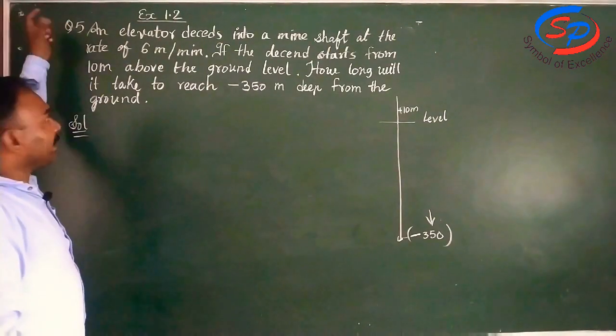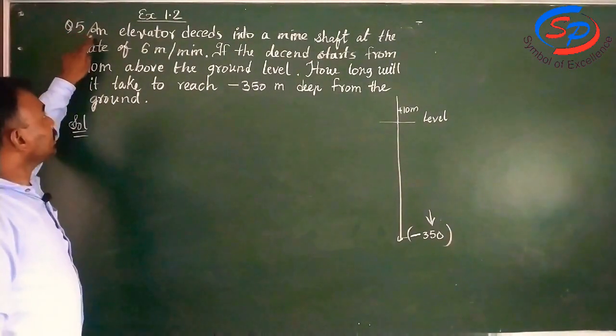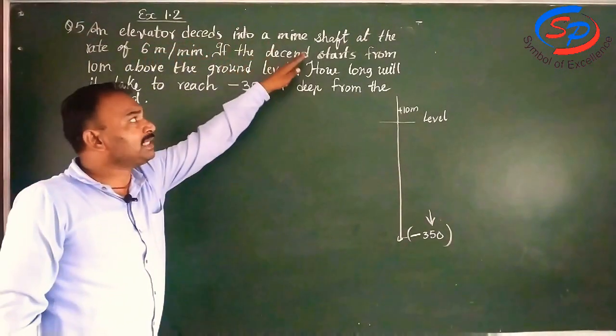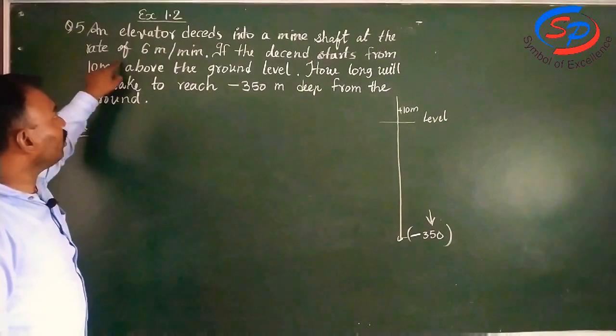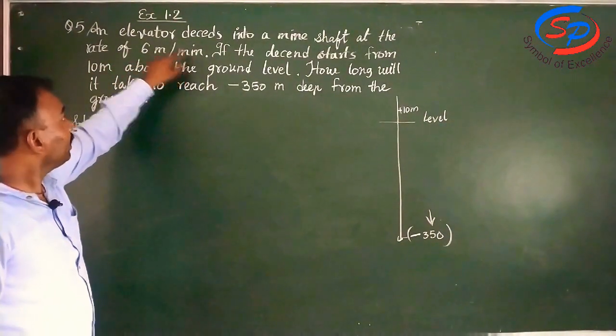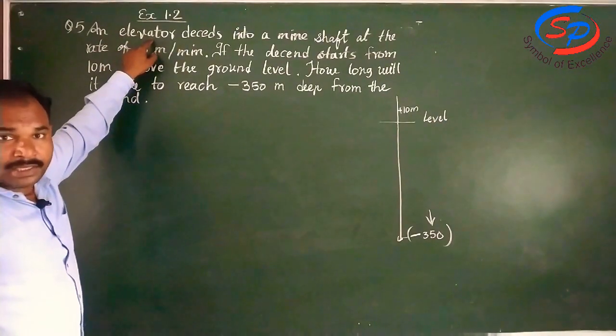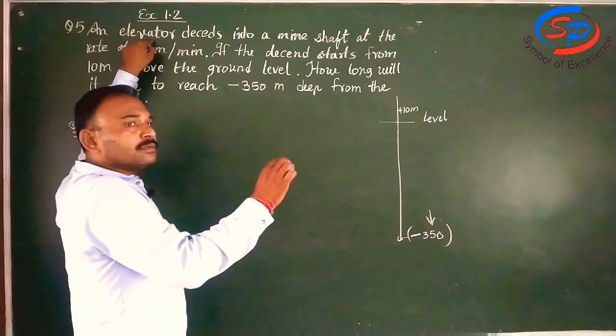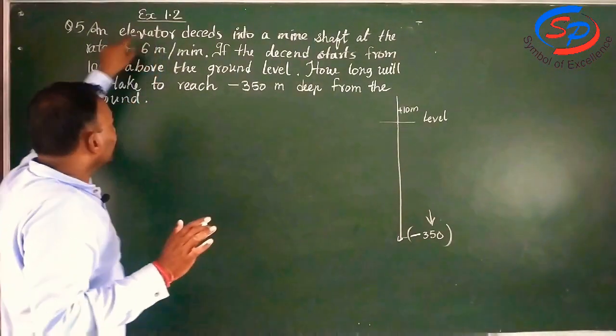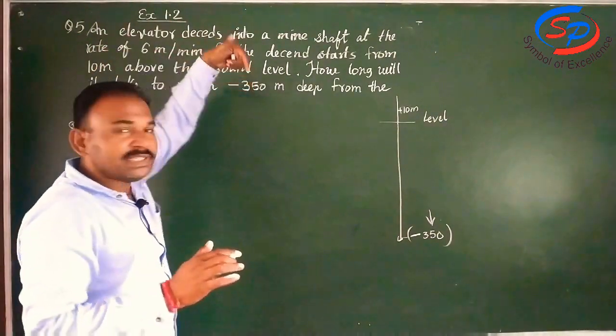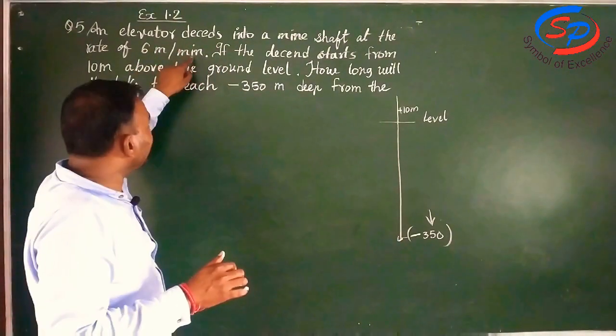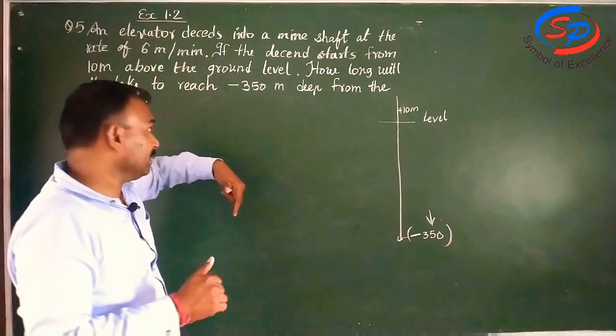Dear students, I have a more positive question. An elevator descends into a mine shaft at the rate of 6 meter per minute. Elevator means a drill machine that descends, meaning it goes downward, 6 meter per minute. In one minute it goes 6 meters down.